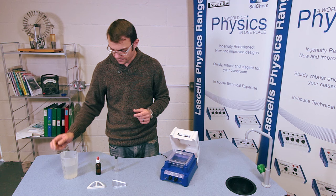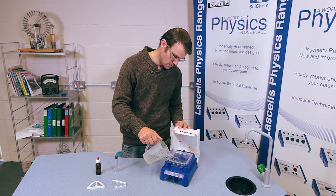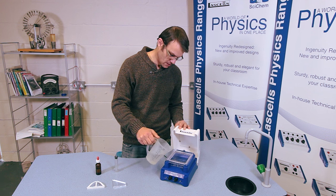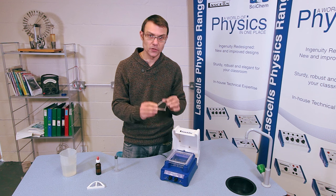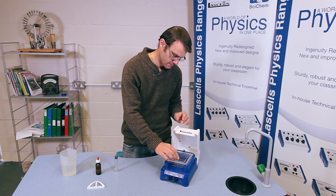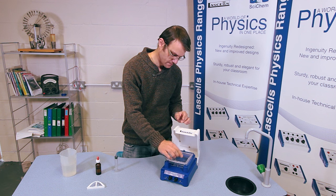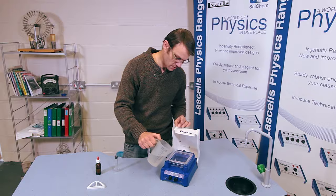So as usual we're going to half fill the tank with water. There we go. And we're going to put the angled refractor in the bottom corner of the tank in this orientation, just like that. We want to add more water until we just cover the surface of the shape.